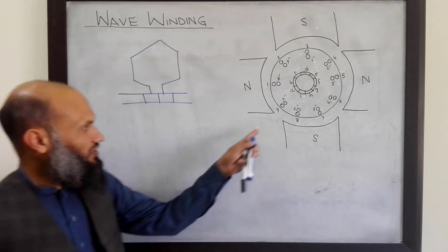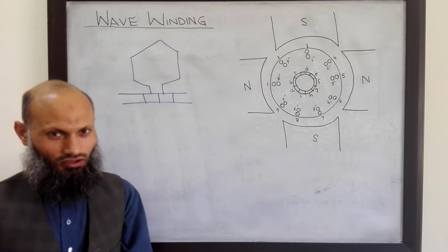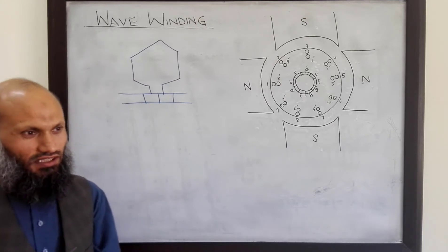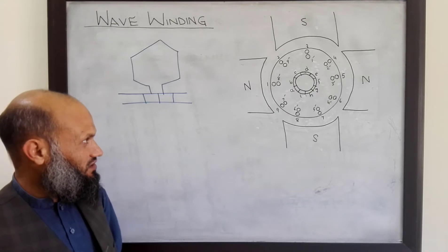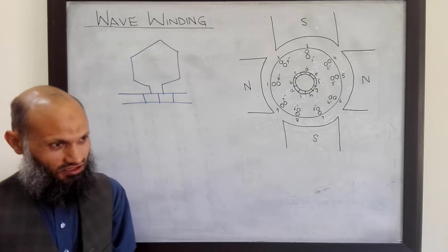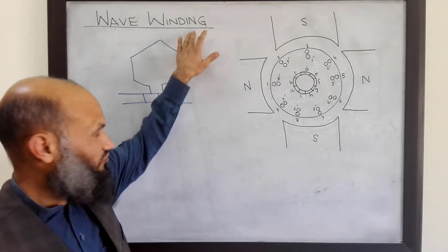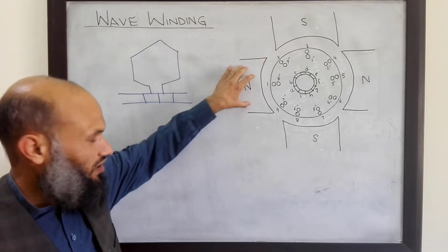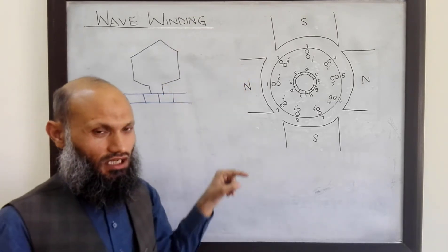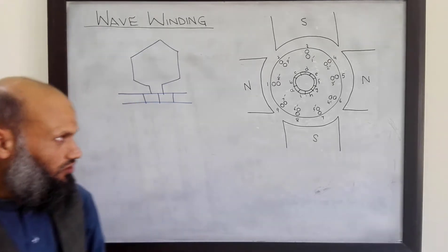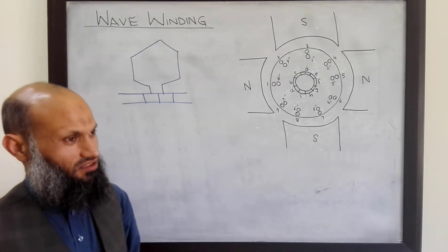In the case of wave winding, the end of every second coil is connected to the adjacent commutator segment. For the case of wave winding, for a four-pole machine, the end of every second coil is connected to the adjacent commutator segment.